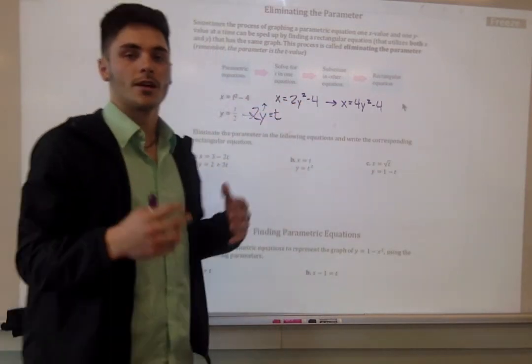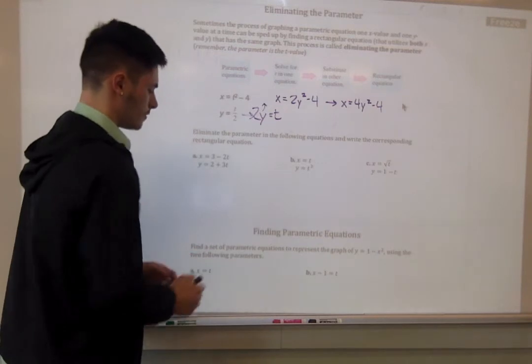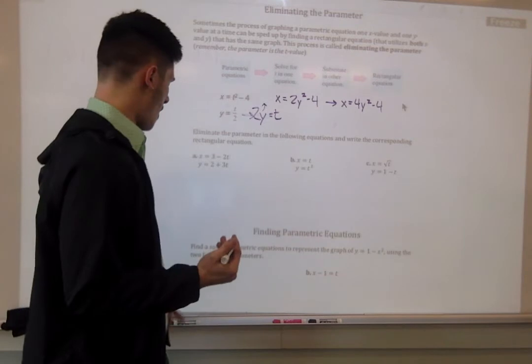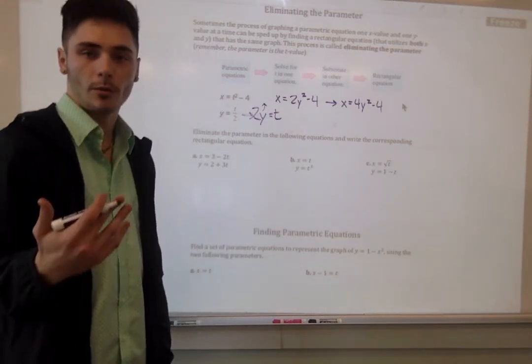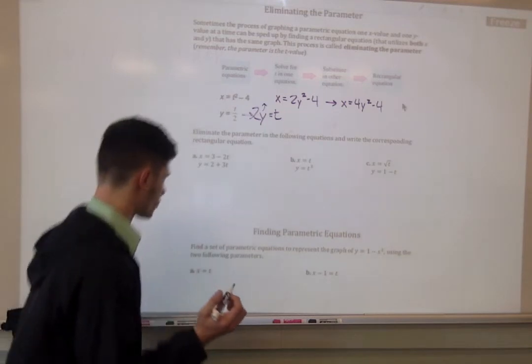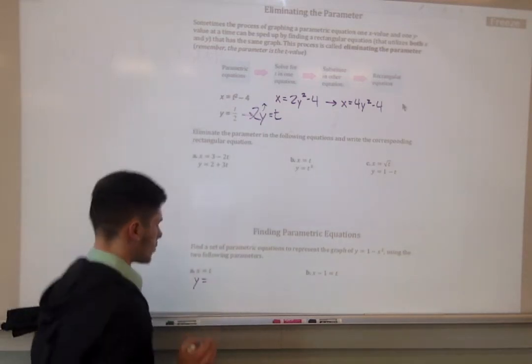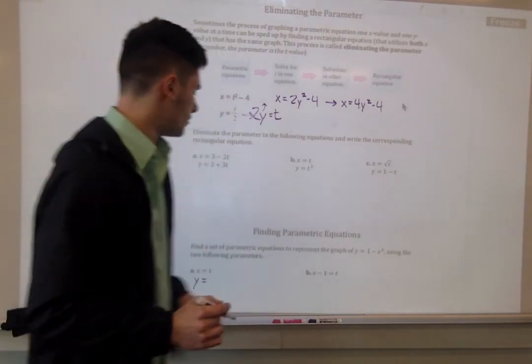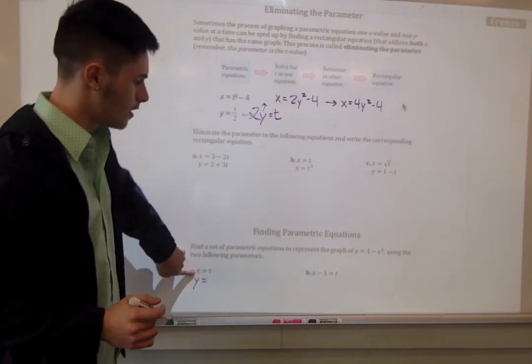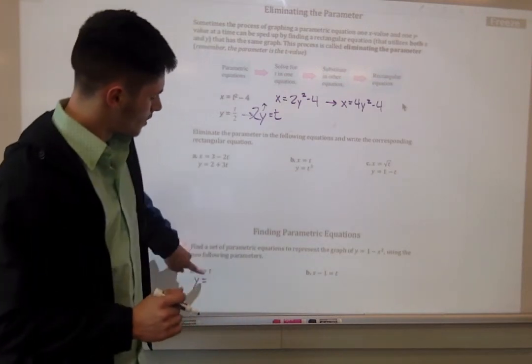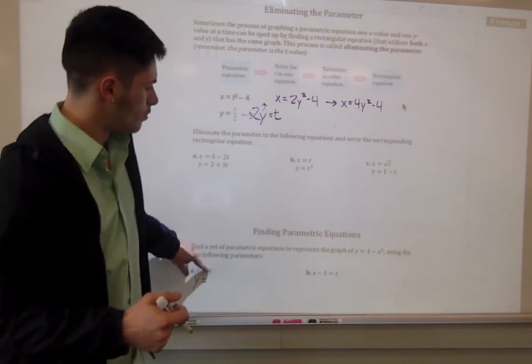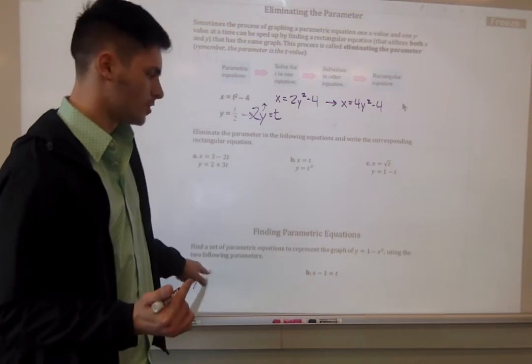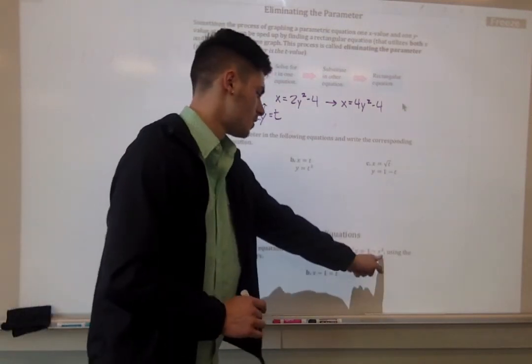What we should do there is define one of these variables by t and then plug it into a rectangular equation. If we know that x equals t, that's a parametric equation right there. Our other parametric equation would be y equals, and this is what we're going to have to figure out. Since we have our rectangular equation here, we can take this statement, x equals t, and use it so that we can plug it in here and figure out an equation for y. Since x equals t, or t is equal to x, we can plug in t to this equation here.